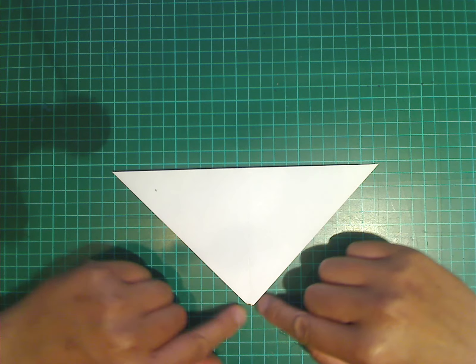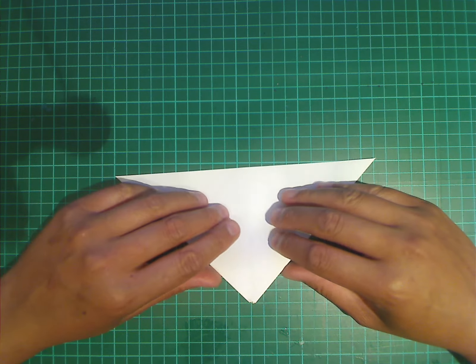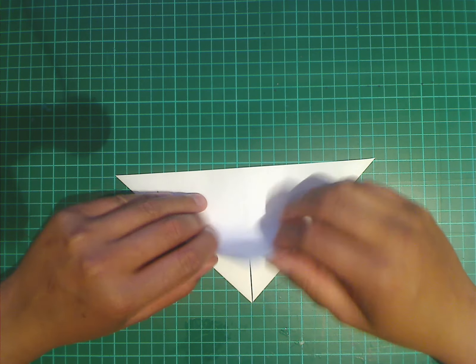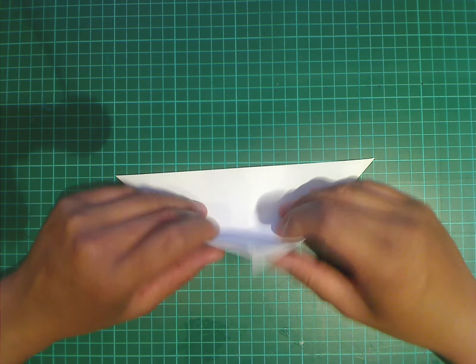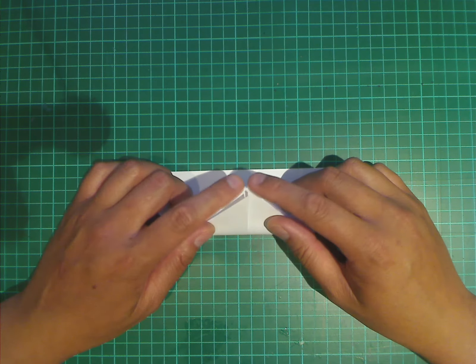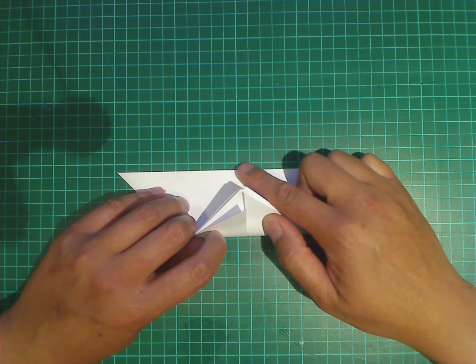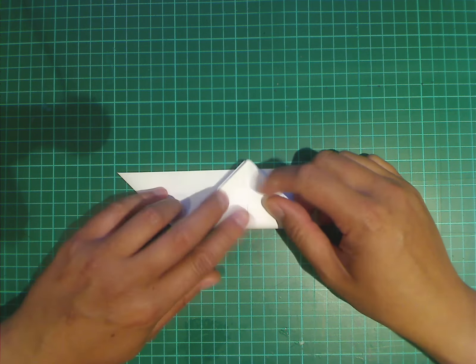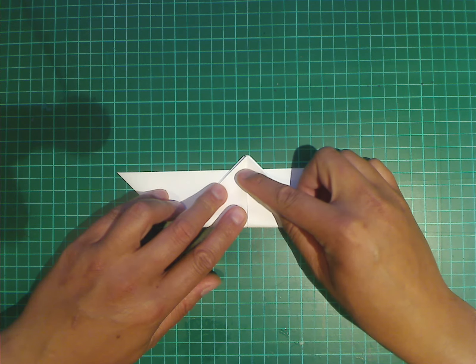Now we're going to fold the entire model in half. And by that, I'm saying we're taking this point here and these two loose flaps here. And we're going to fold it upwards. And we're going to make sure that the point actually goes past this edge by about a centimeter.